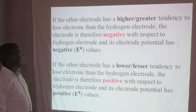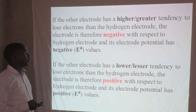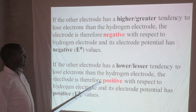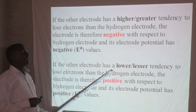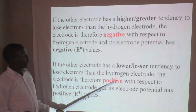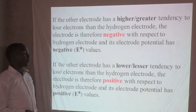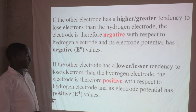Number two: if the other electrode has a lower, or lesser, tendency to lose electrons than the hydrogen electrode, the electrode is therefore positive. If it has a lower tendency to lose, it is more likely to gain electrons. Therefore the tendency will be positive — it is a positive terminal with respect to the hydrogen electrode, and the E-naught value will be positive.